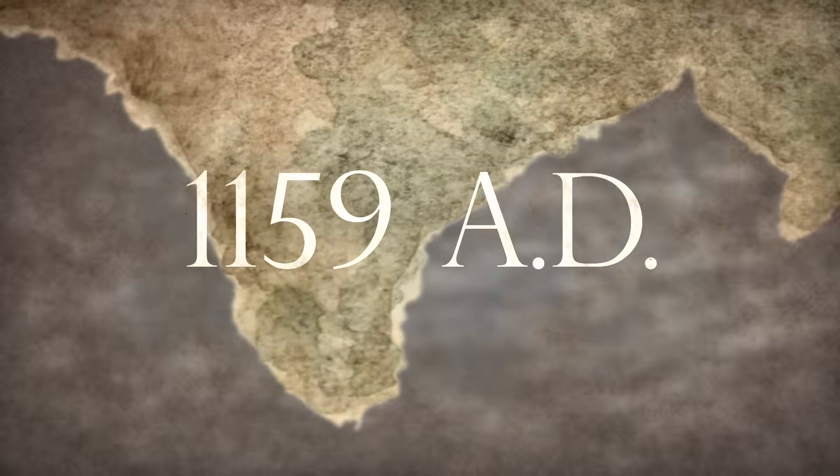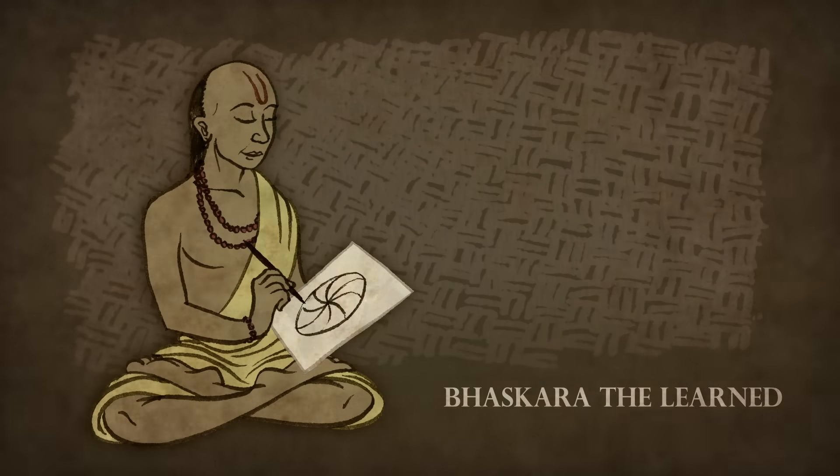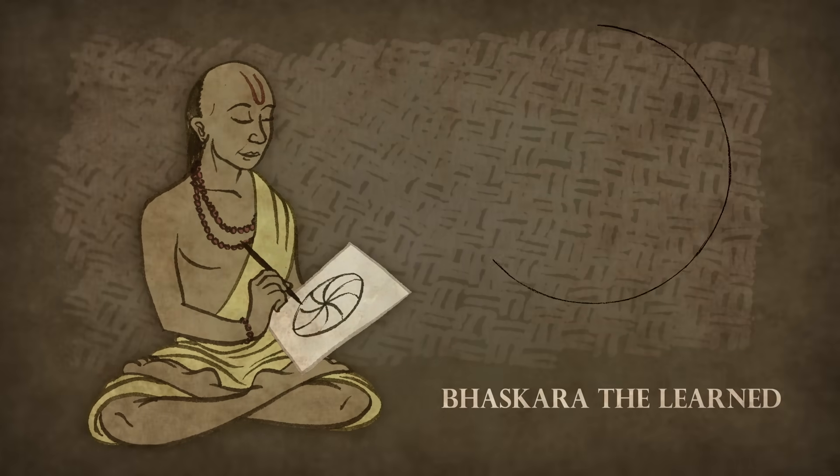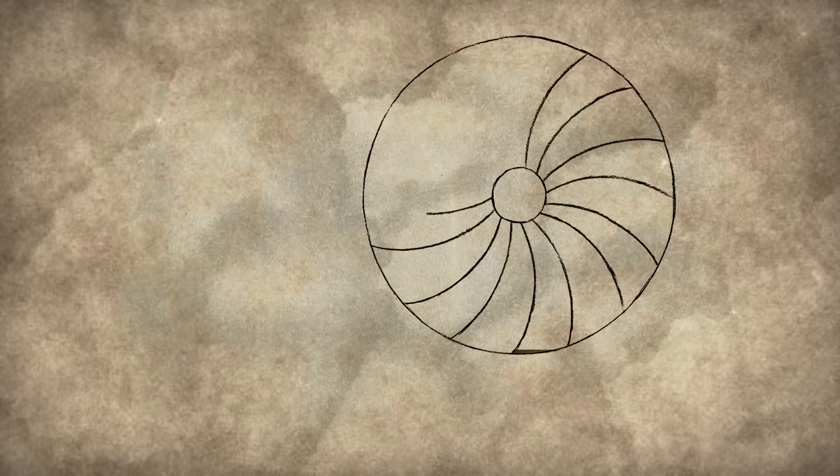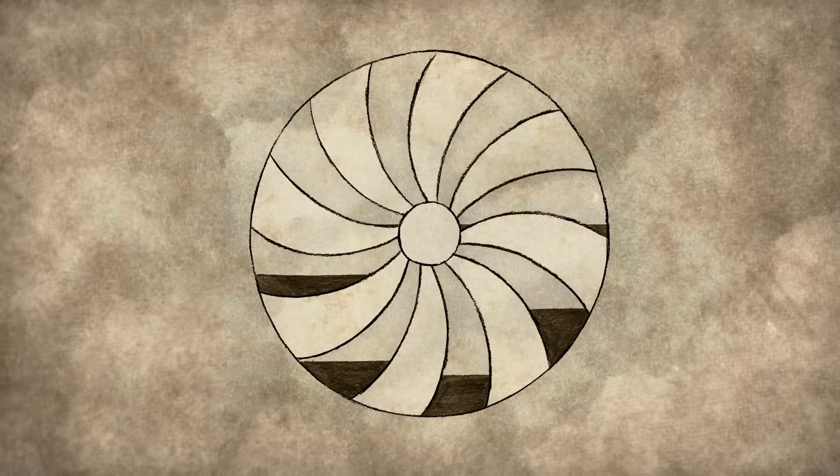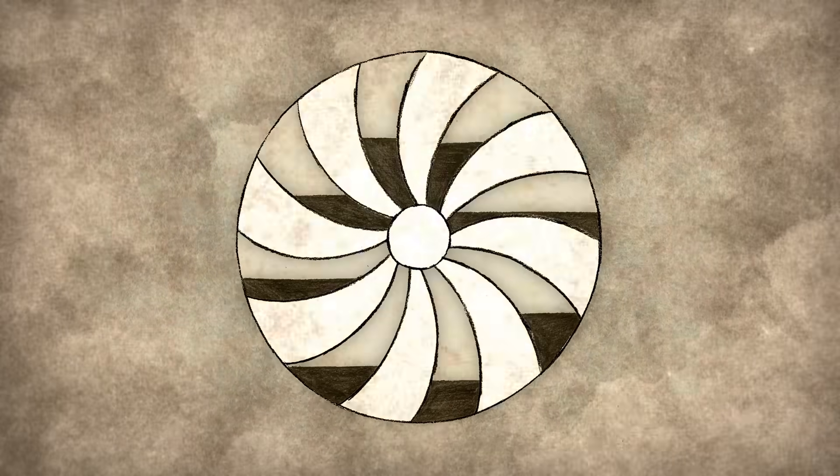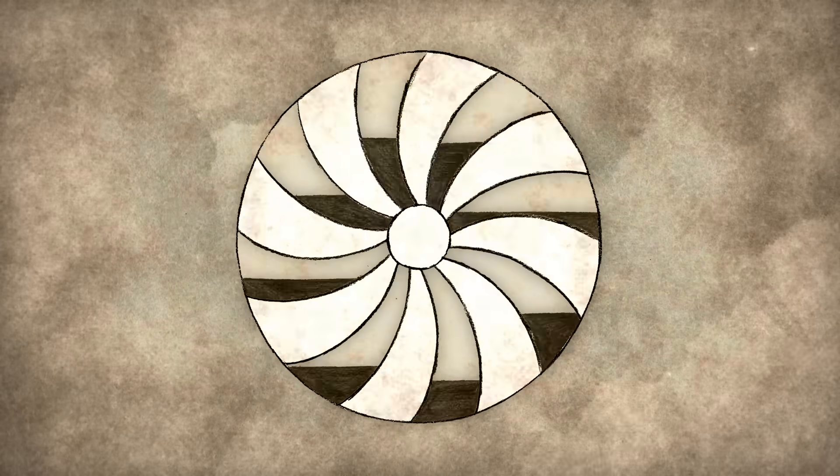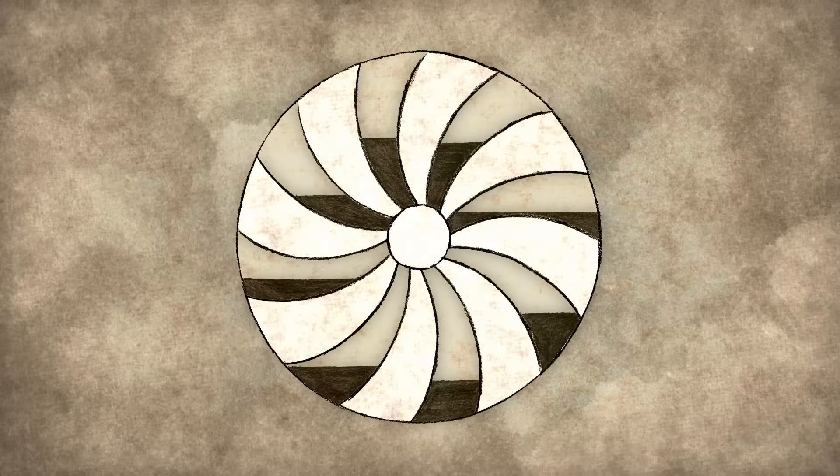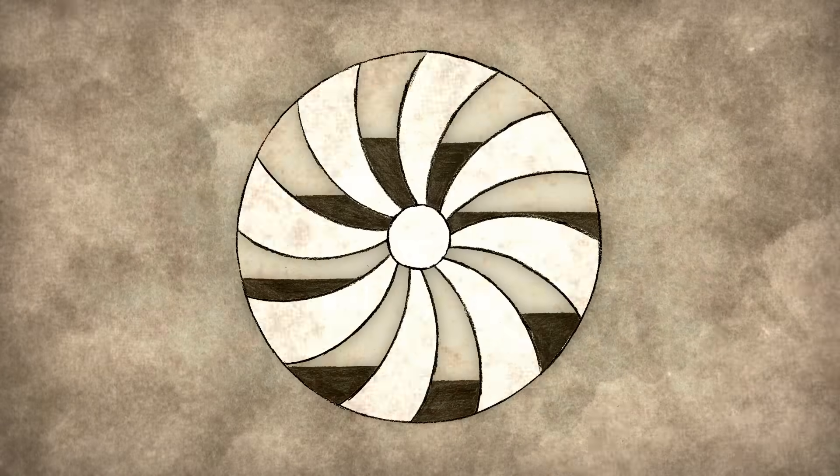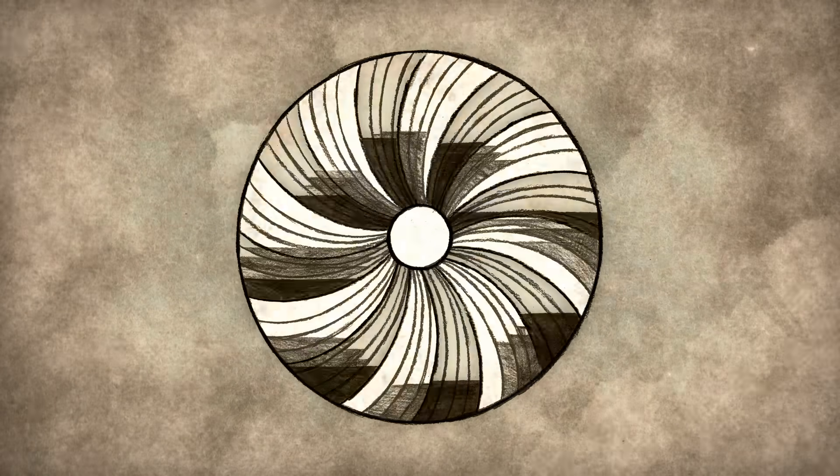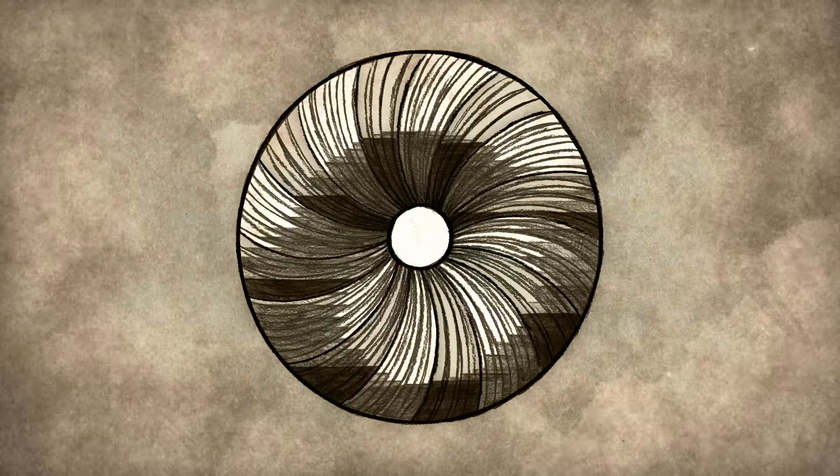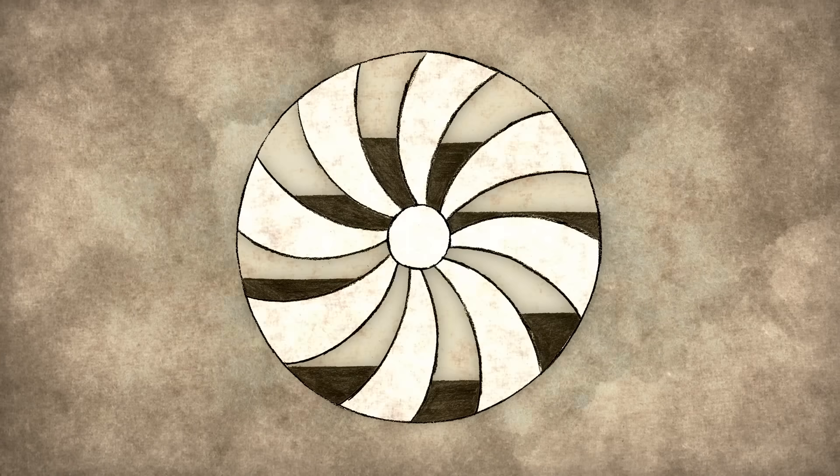Around 1159 A.D., a mathematician called Bhaskara the Learned sketched a design for a wheel containing curved reservoirs of mercury. He reasoned that as the wheel spun, the mercury would flow to the bottom of each reservoir, leaving one side of the wheel perpetually heavier than the other. The imbalance would keep the wheel turning forever.